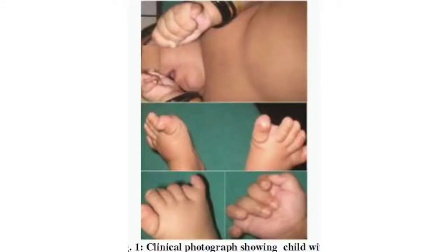Now look at this picture. You can see the baby is obese, and the baby has six toes — an increase in the number of toes, which is polydactyly. Some patients also show syndactyly, which is the joining of two toes or fingers.